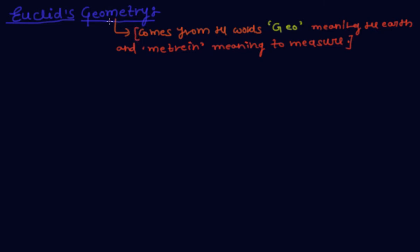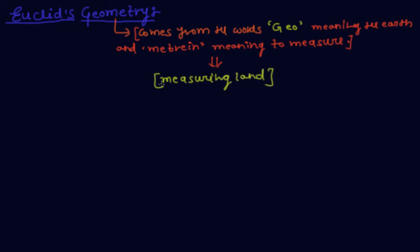So the geometry word comes from the Greek word 'geo,' meaning the earth, and 'metrian,' meaning to measure. So geometry appears to have originated from the need for measuring land in different ancient civilizations.